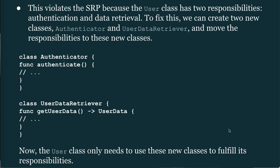This violates the SRP because the User class has two responsibilities: authentication and data retrieval. To fix this, we can create two new classes — Authenticator and UserDataRetrieval — and move the responsibilities to these new classes: class Authenticator { func authenticate() } and class UserDataRetrieval { func getUserData() -> UserData }.